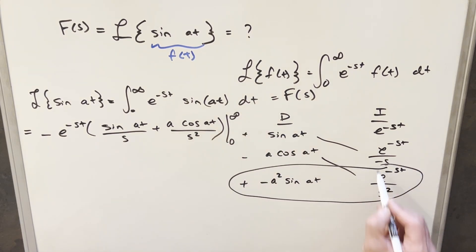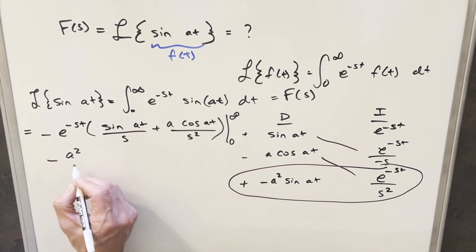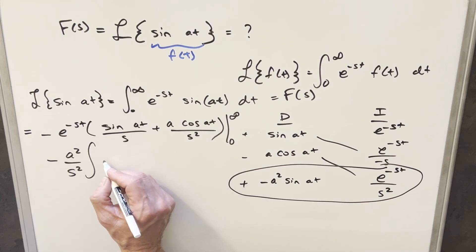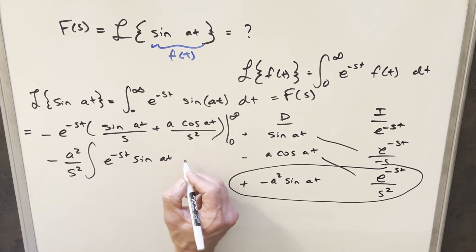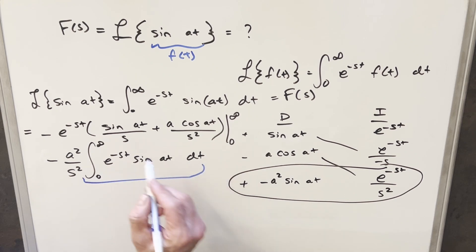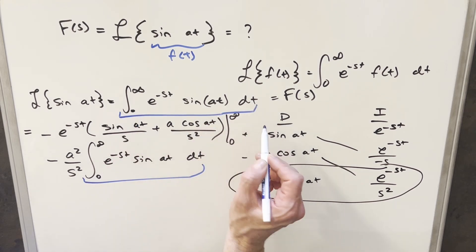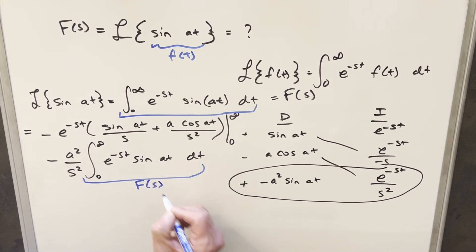And then this last part is going to be an integral. So for this integral, the a squared and the s squared are constant. So I'm going to, we have our minus sign, we can factor, we can pull an a squared over s squared out front of the integral. And then the rest of it's going to be e to minus st times sine at dt. But the thing to notice, this integral here is exactly the same as this integral here, our F of s. So we can just call this, we can label this one F of s, which is the same exact thing.